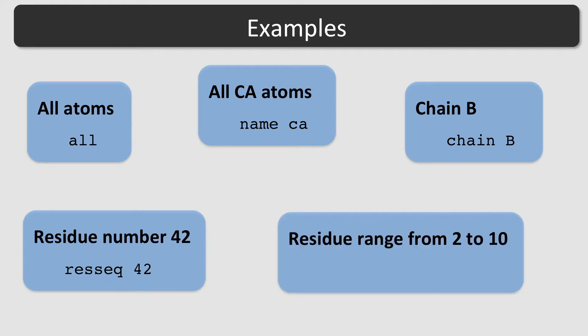To select a range of residues, such as the residues from number 2 to 10, use RSEC 2 colon 10. 2 and 10 are included in the selection.